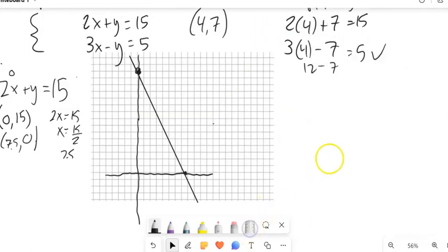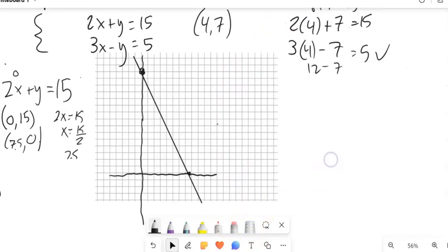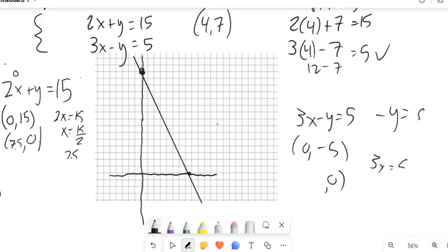And if I want to do the second line, I would do the same sort of thinking. When x is 0, this is a 0. Notice it says negative y equals 5. So y would equal negative 5. And then when y equals 0, kind of hard to figure out where 5 thirds would be, right? So this method, it's okay. Graphing gets a little bit tricky.